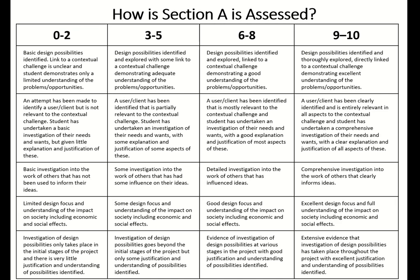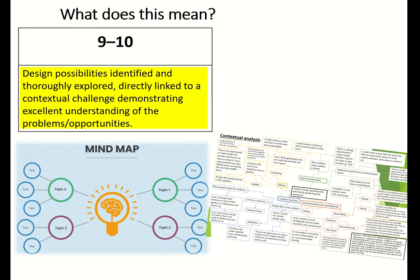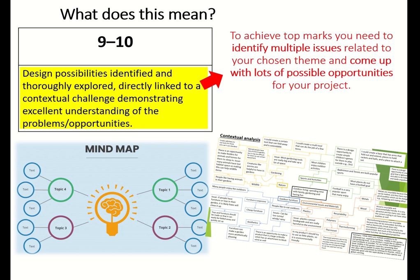So how is Section A assessed? Looking at the mark scheme, focusing on the top band — especially the upper marks — it says: design possibilities identified and thoroughly explored, directly linked to a contextual challenge, demonstrating excellent understanding of the problems or opportunities. Look at those keywords; that's what you need to hit for the top marks. In plain English, it means you've got to identify multiple issues relating to your chosen theme and come up with lots of possible opportunities.